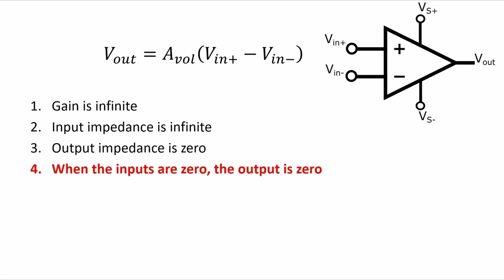The fourth characteristic of an ideal op-amp is that when the inputs are zero, the output is zero. This is what you would expect from an ideal op-amp but it's good to point out so that you understand there is no DC offset at the output.